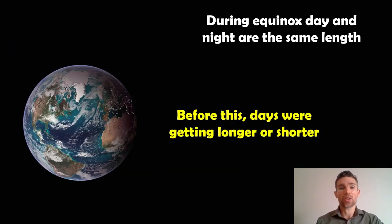During the equinox, your day and night are going to be the same length. Now before or leading up to this, depending on which one it is, your days would have been getting shorter or longer, and then after the equinox they'll do the opposite. They'll start getting longer or shorter again because the tilt changes.